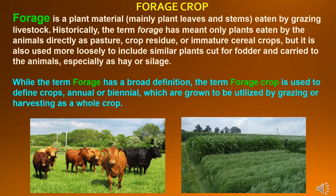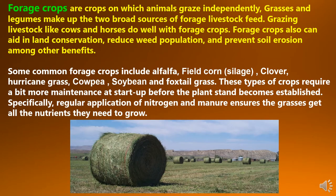While the term forage has a broad definition, the term forage crop is used to define crops, annual or biennial, which are grown to be utilized by grazing or harvesting as a whole crop. Forage crops are crops on which animals graze independently. Grasses and legumes make up the two broad sources of forage livestock feed. Grazing livestock like cows and horses do well with forage crops.